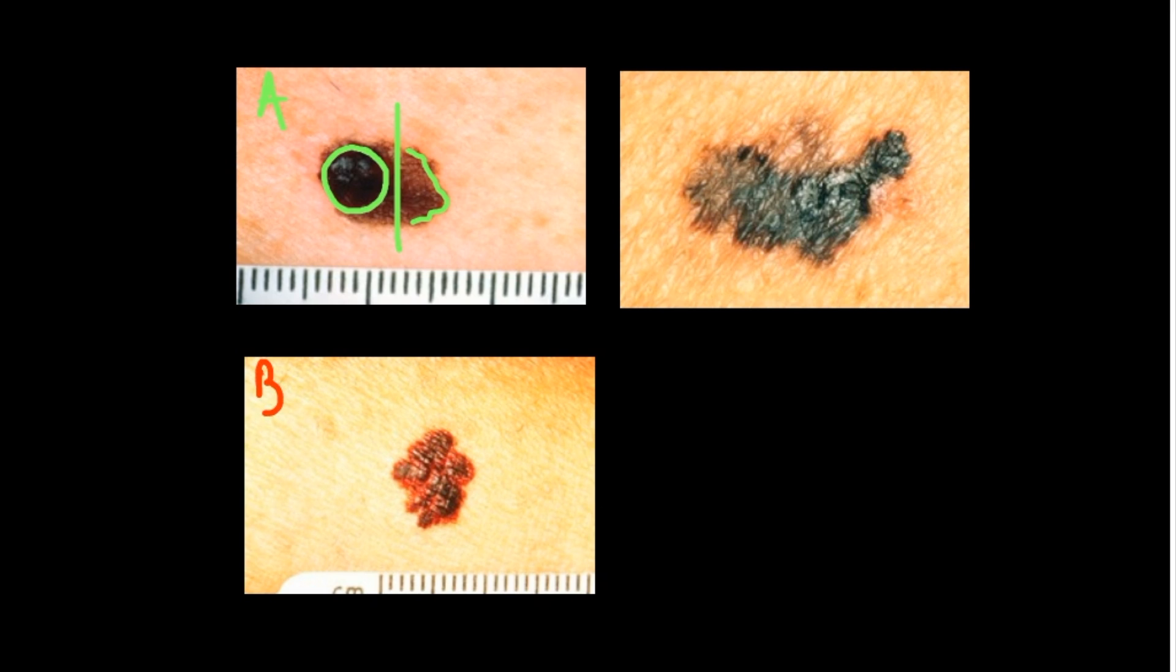If we look at B, remember B standing for border and we draw a line around the outside of this melanoma here you can see that the border is uneven and it's jagged. You may even get something called notching or stepping where the raised bit of the melanoma then drops down. So this border is uneven and this again raises your suspicions.